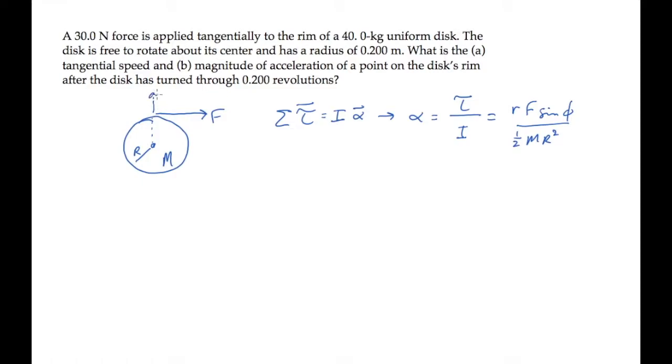And phi is the angle between the R vector and the force. We draw them tail to tail, and see that is 90 degrees. Sine of 90 is 1.